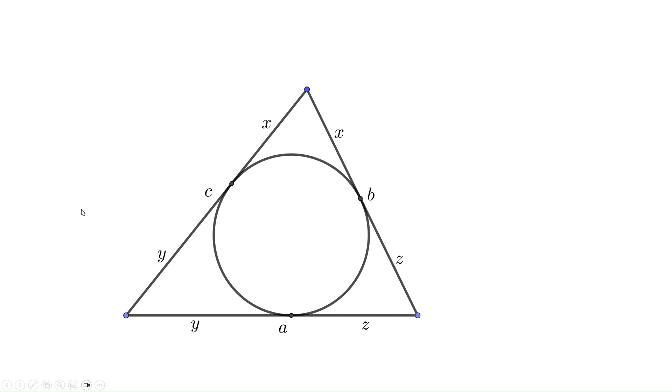So the segment lengths can be labeled as x, x, y, y, and z, z. Then we have side lengths a = y+z, b = z+x, and c = x+y.